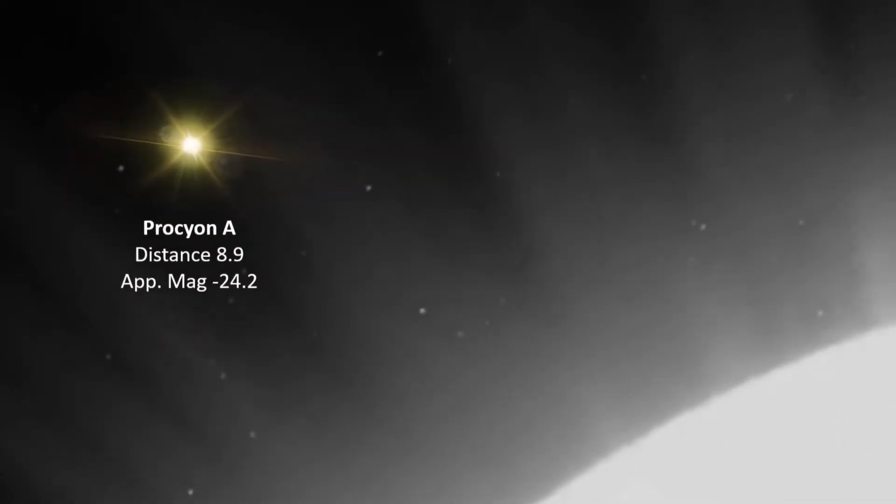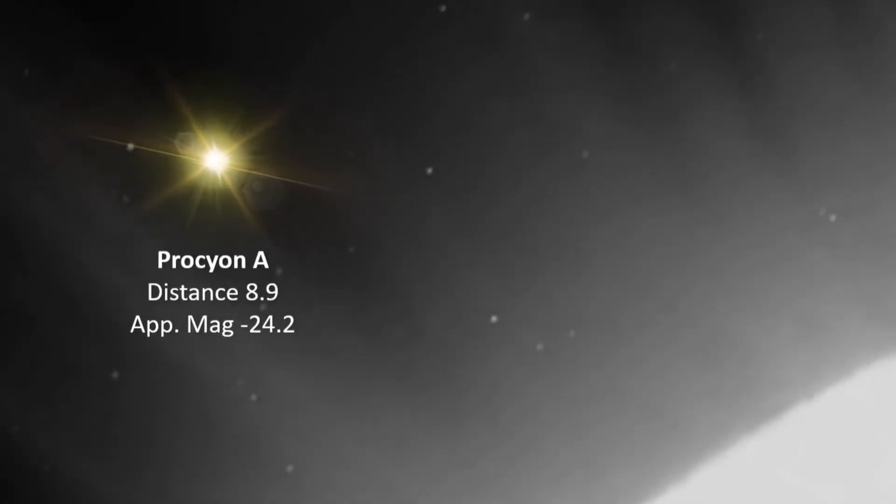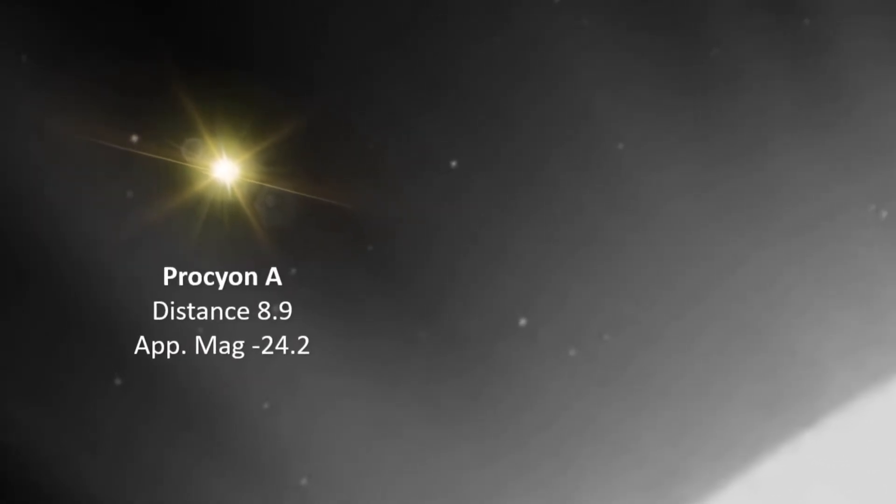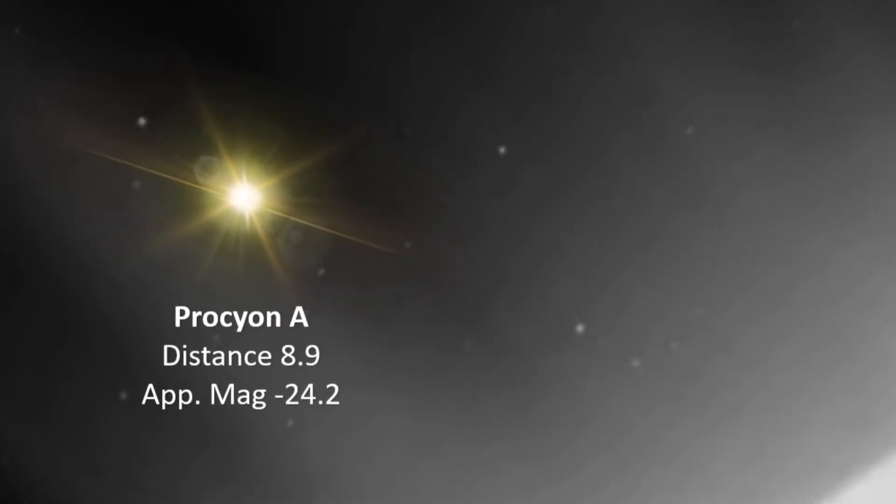Looking back now from Procyon B, Procyon A would shine at perihelion to approximately the same level as the sun at Jupiter in our own system, minus 24.2 apparent magnitudes, although it would of course actually be twice as far away.